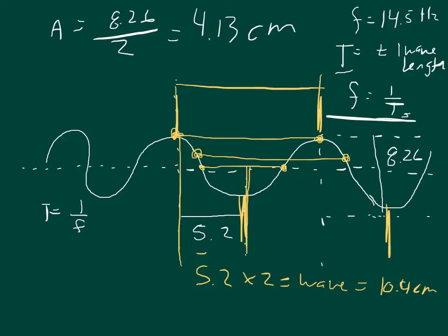And so if the frequency is 14.5, then 1 over 14.5 is equal to 0.068966, and that's in units of seconds. And so that's the answer to part C.